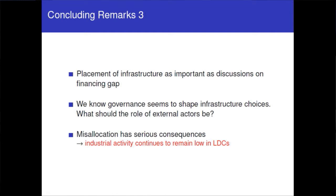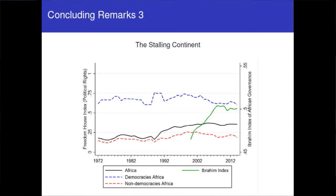This has serious consequences for structural transformation and industrial development. If you don't have roads, it's very hard for an economy to structurally transform, and it potentially explains why we see very little industrial activity in poor countries. Recently The Economist has been talking about Africa again stalling — institutional governance quality has staggered according to the Mo Ibrahim Index, with little improvement since 2011. Across measures from Freedom House, democracies are deteriorating in political rights as well. We should be aware of the institutional environment that investment decisions are being made in.